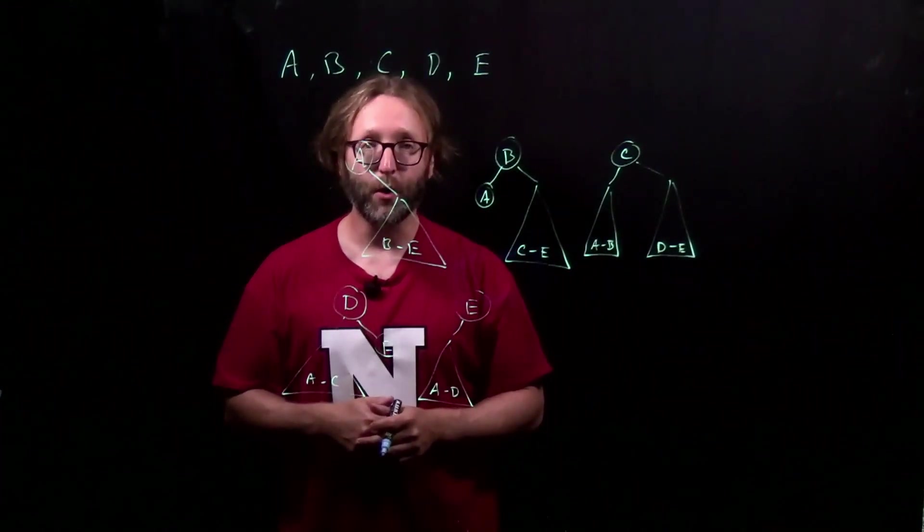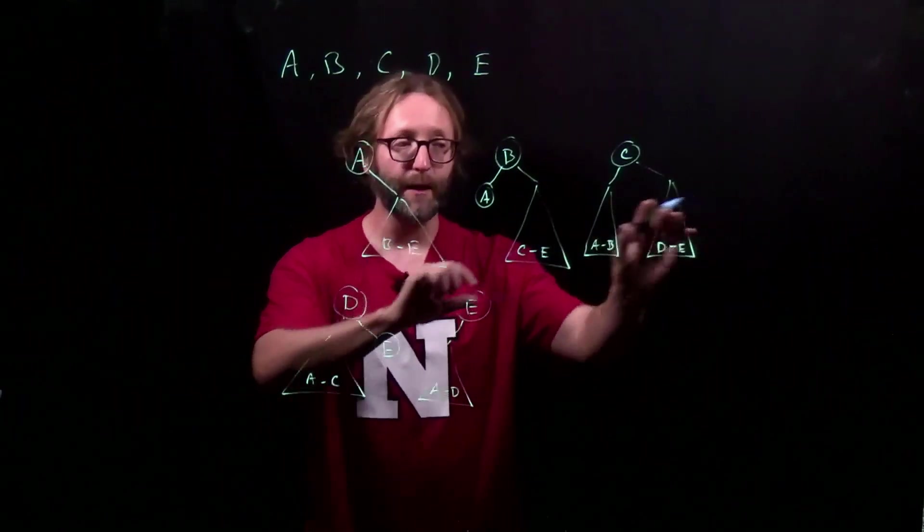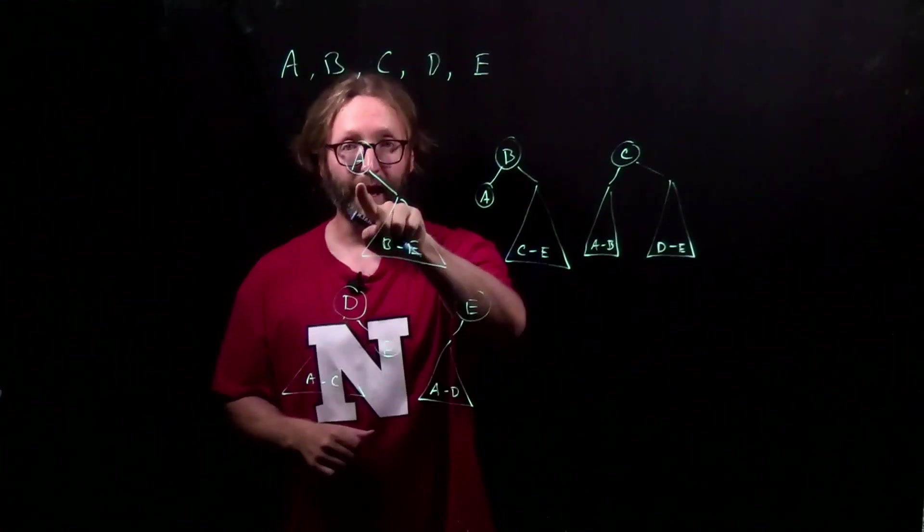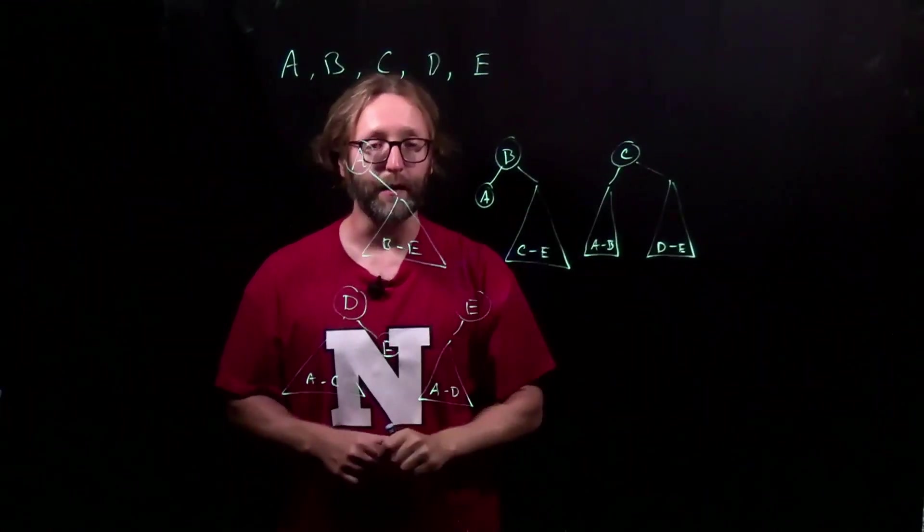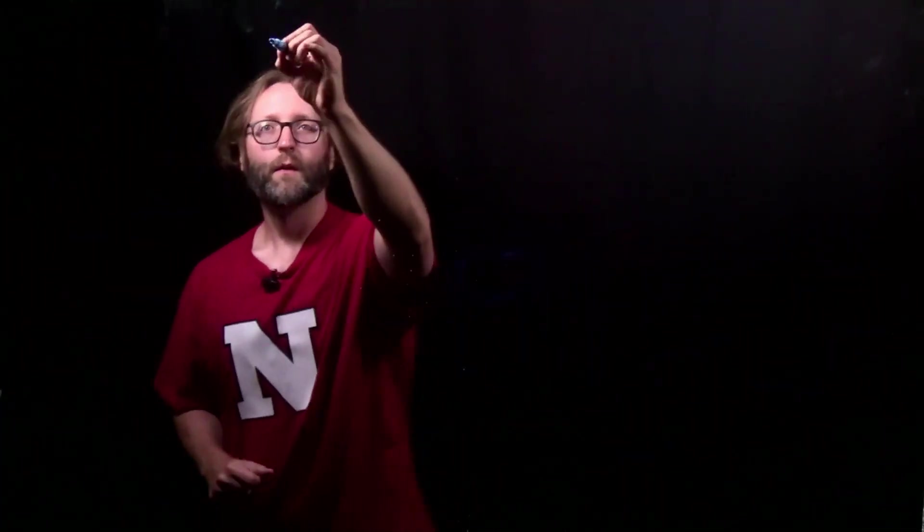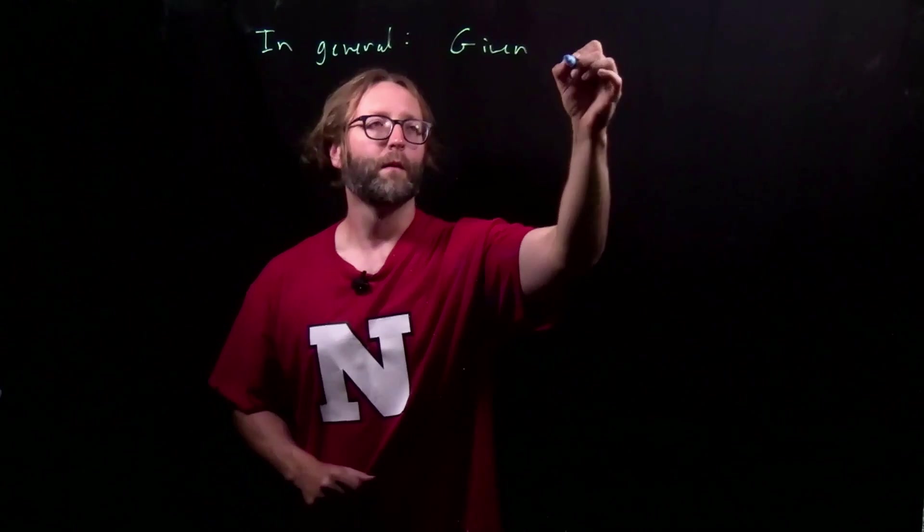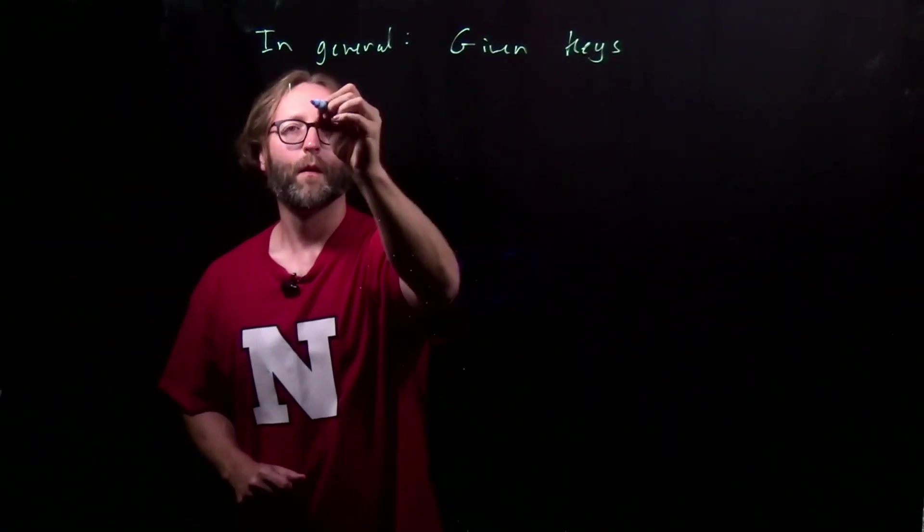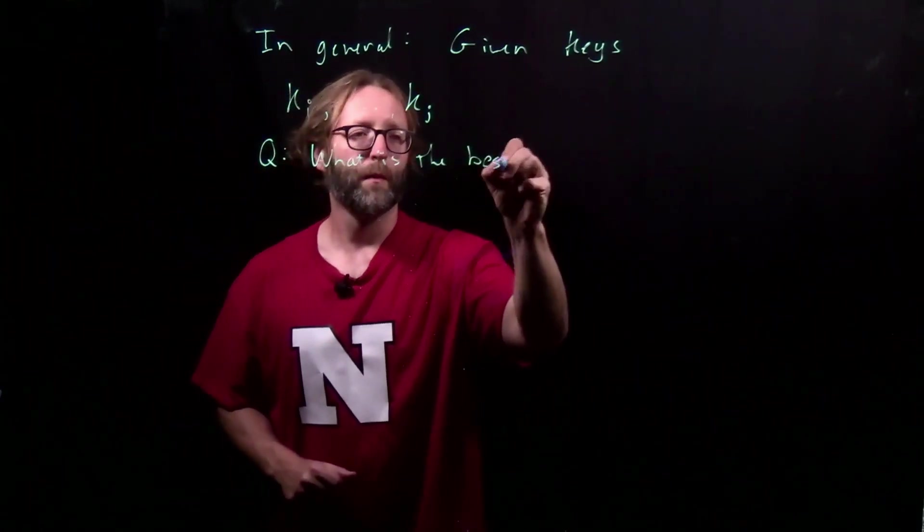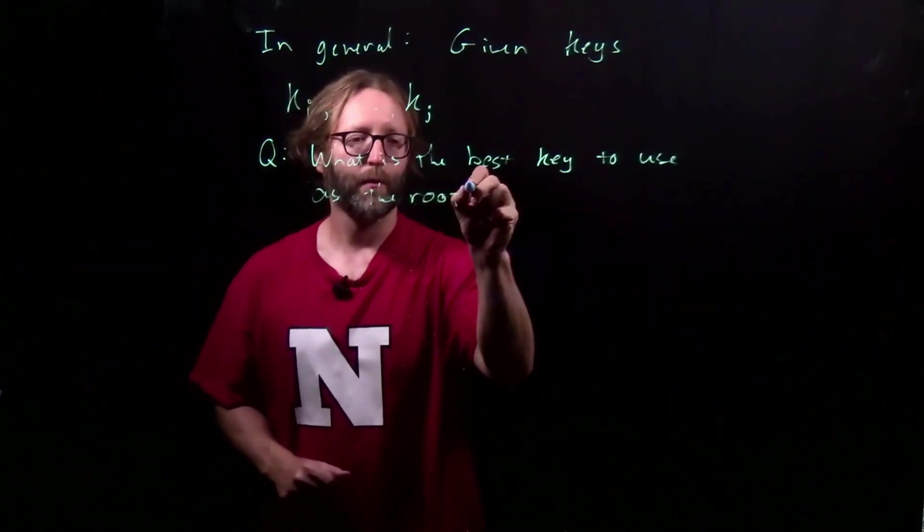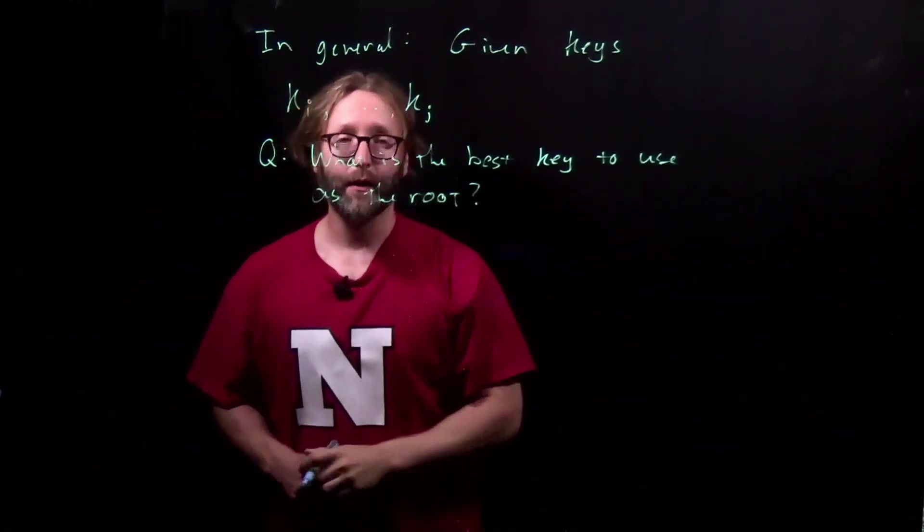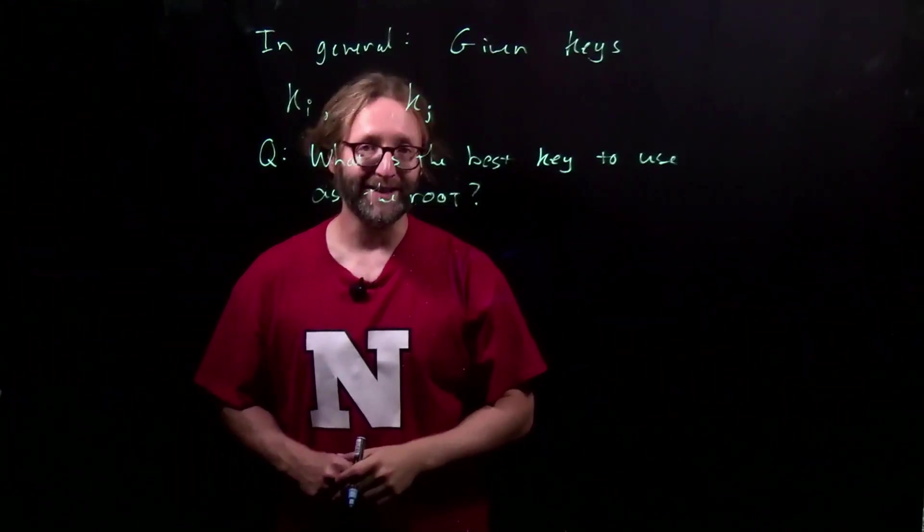Now we're going to consider all five of these possibilities. But we're also going to need to know what the optimal binary search tree is for each one of these subtrees in order to make our decision. Is it best to use A as the root, or B or C or D or E? That suggests a nice recursion. In general, if you're given keys KI through KJ, the question is, what's the best key to use as the root?